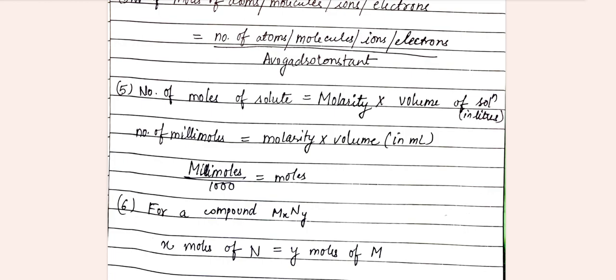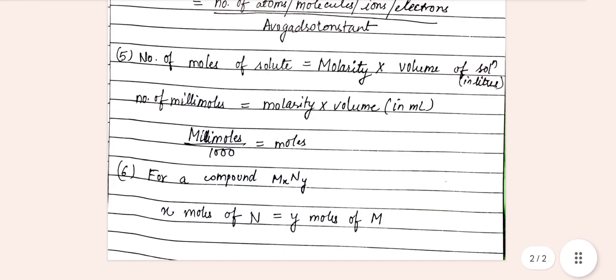If we have to find out number of millimoles, then we multiply molarity with volume in milliliters. To relate millimoles to moles, the formula is millimoles divided by 1000 equals moles.